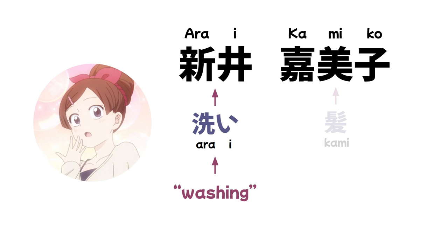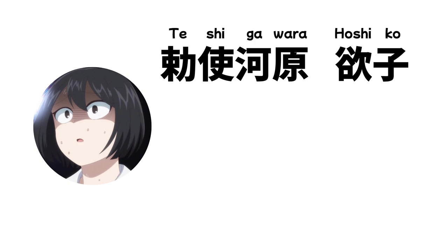Teshigawara Hoshiko appears in the episode where Komi-san is tasked to hand out tissues to people on the street. Teshigawara-san is a random passerby who desperately wants tissues because she needs to sneeze, spilled coal on her hands, is sweaty, and has gum stuck to her shoe. That's why her name is a pun on 'Tissue ga Hoshiko,' which literally means 'girl who wants tissues.'